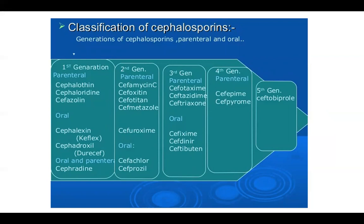Classification of cephalosporins: we have first through fifth generation cephalosporins. First generation — parenteral: cephalothin, cephaloridine, and cefazolin; oral: cephalexin; oral and parenteral: cephradine. Second generation — parenteral: cephamycin, cefoxitin, cefotitan, and cefuroxime; oral: cefaclor and cefuroxime axetil. Third generation — parenteral: cefotaxime, ceftazidime, ceftriaxone; oral: cefixime, cefpodoxime. Fourth generation — parenteral: cefepime. Fifth generation: ceftaroline.